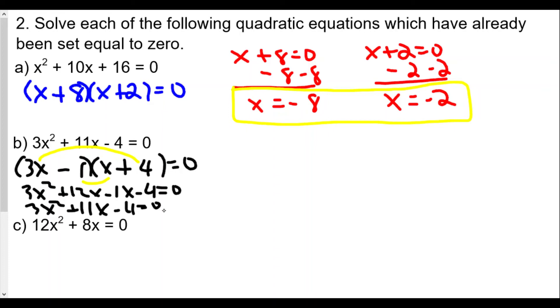Now we're going to set each factor equal to 0. The first one is 3x minus 1 equals 0, and the second factor is x plus 4 set equal to 0. The reason why we set each factor to 0 is because any number multiplied by 0 is equal to 0. If the product ends with 0, then either one or the other or both factors must equal 0.